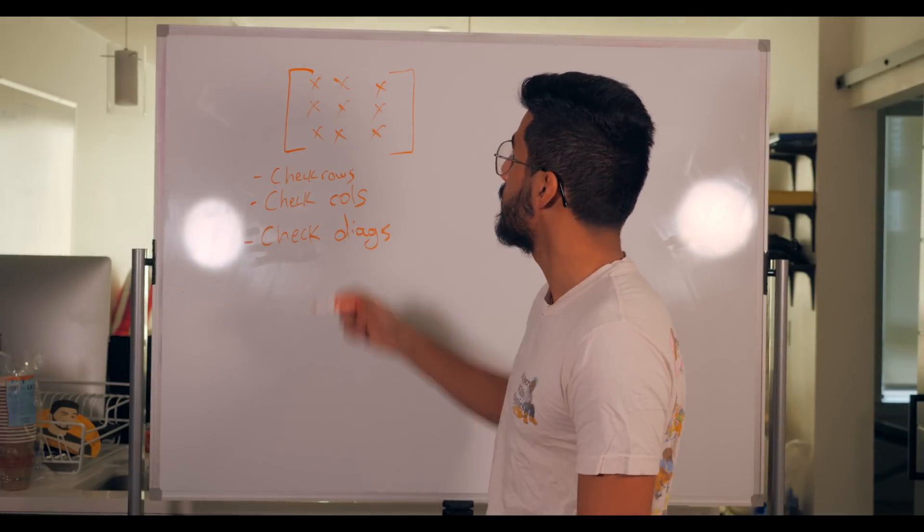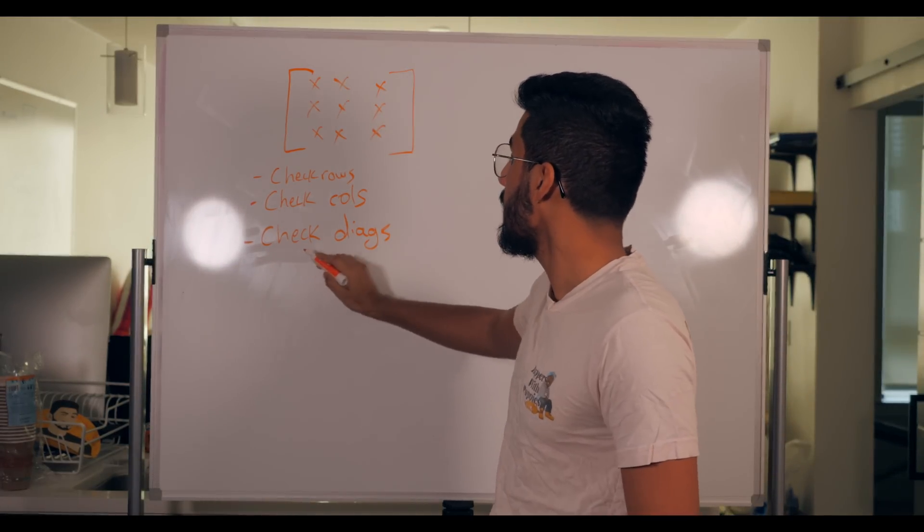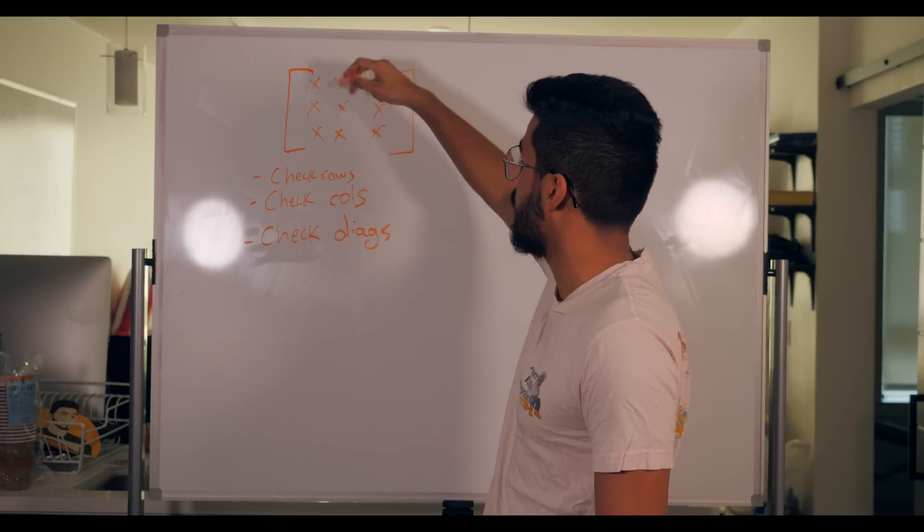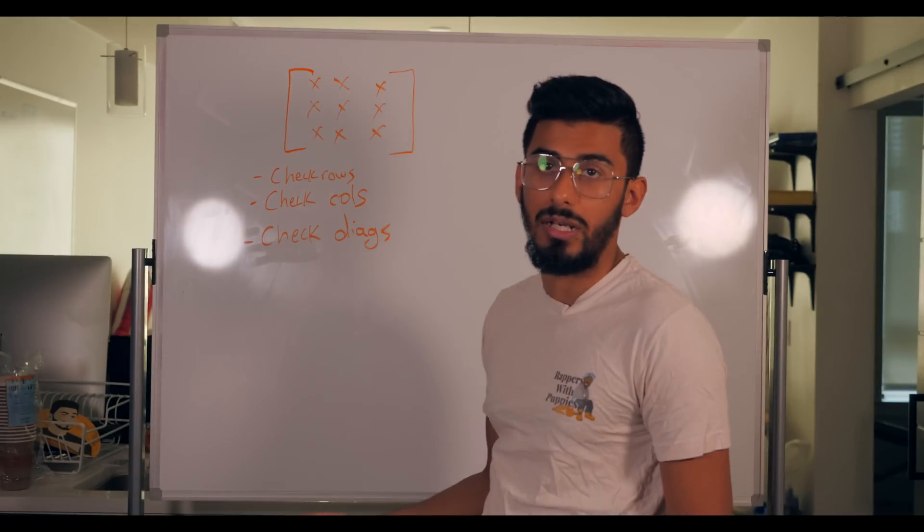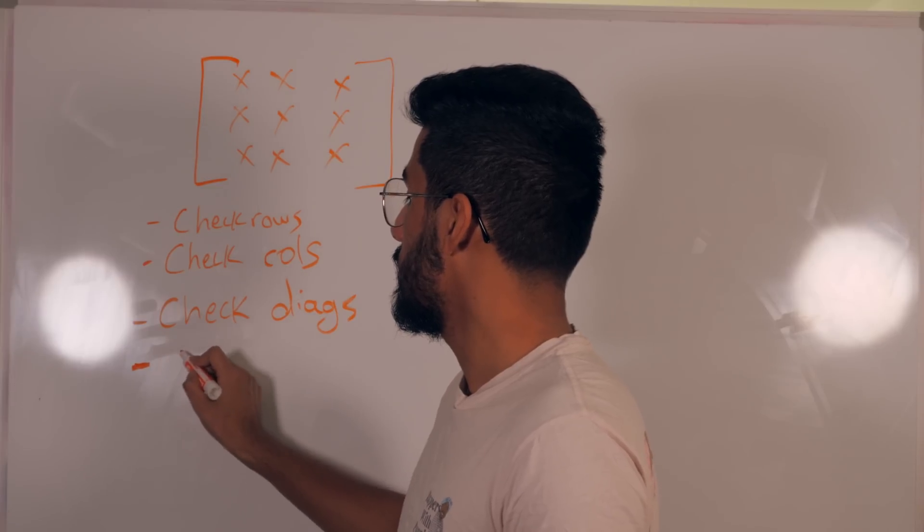Then we have a function called check columns, and that can detect if somebody has won on the columns or not. Then we can have check diags that can check if somebody's won on the diagonal or not. And then we can have something called check win.